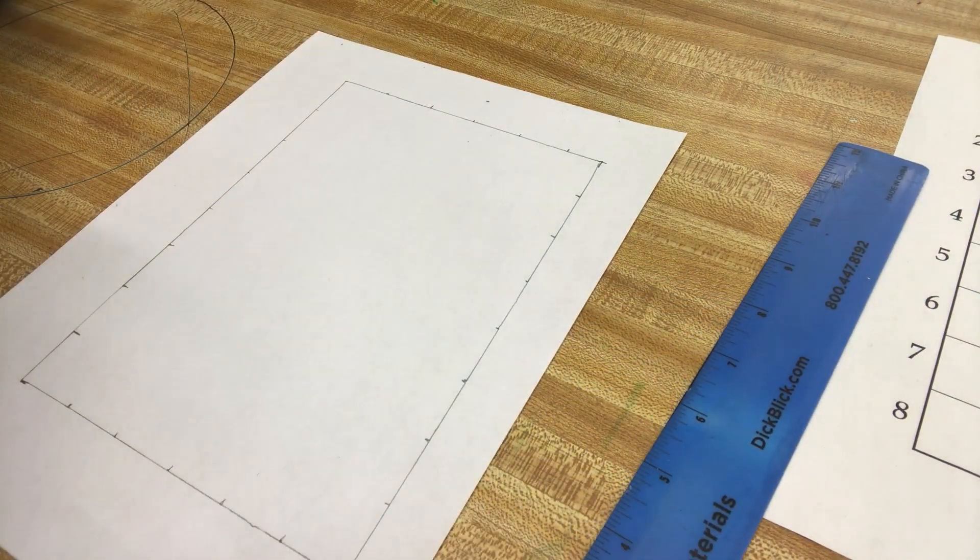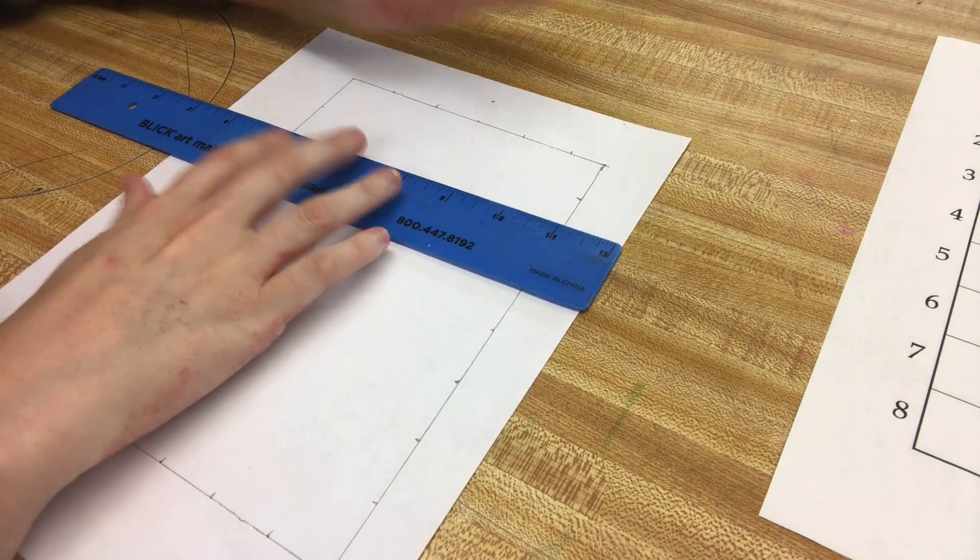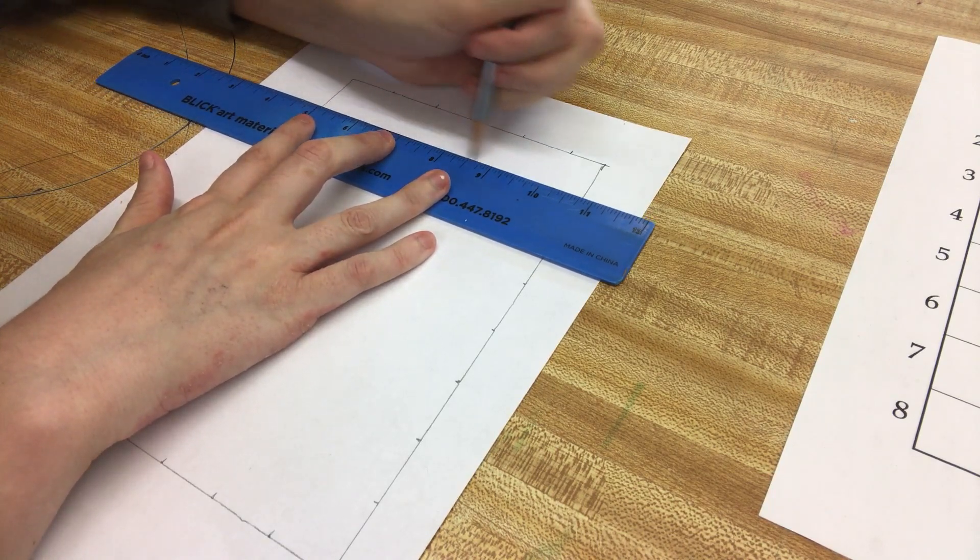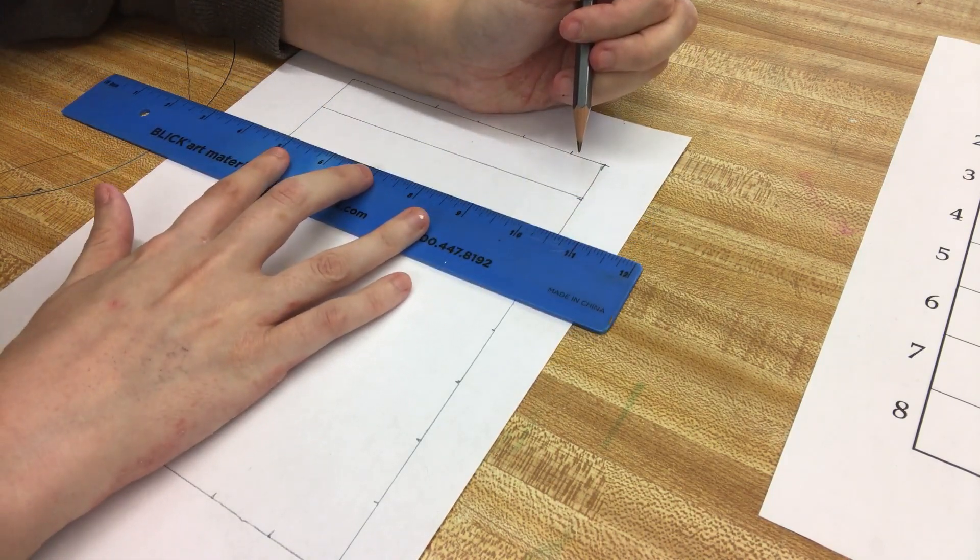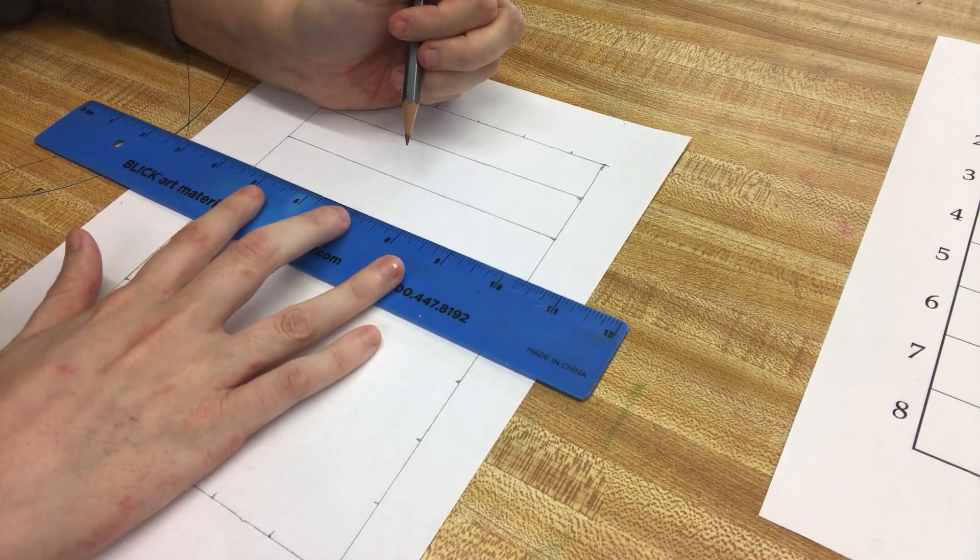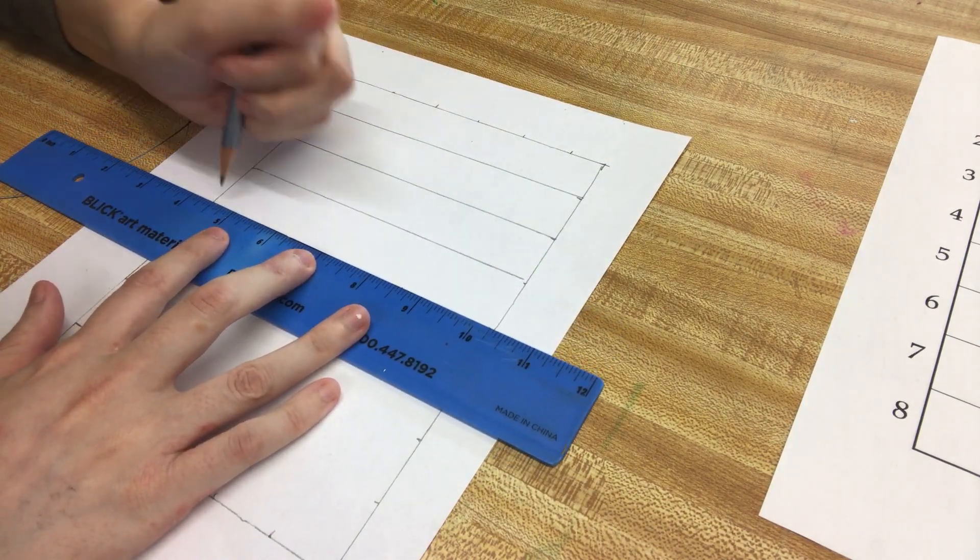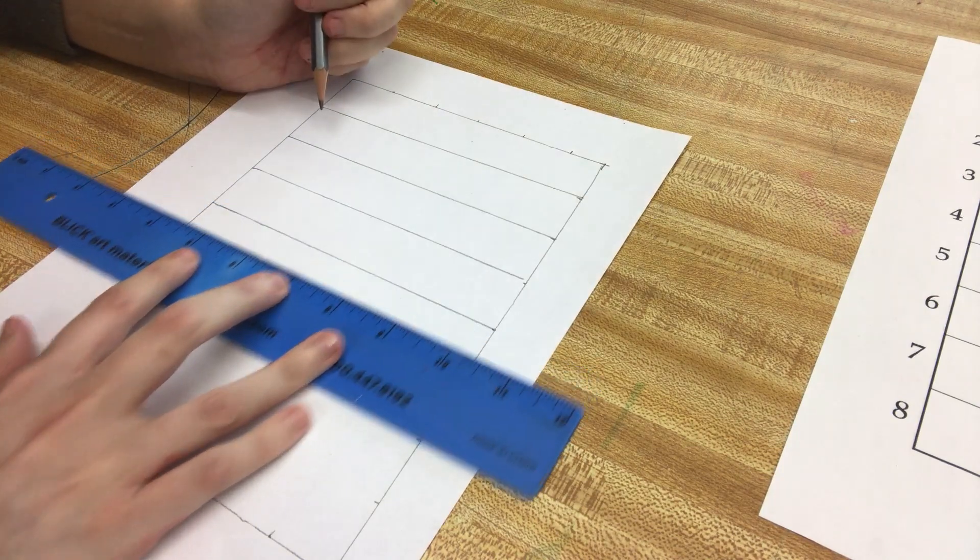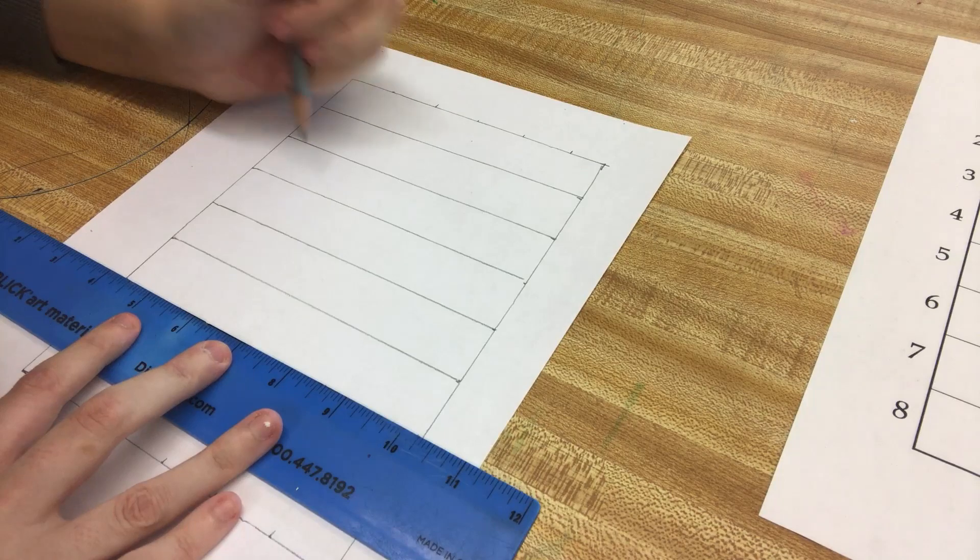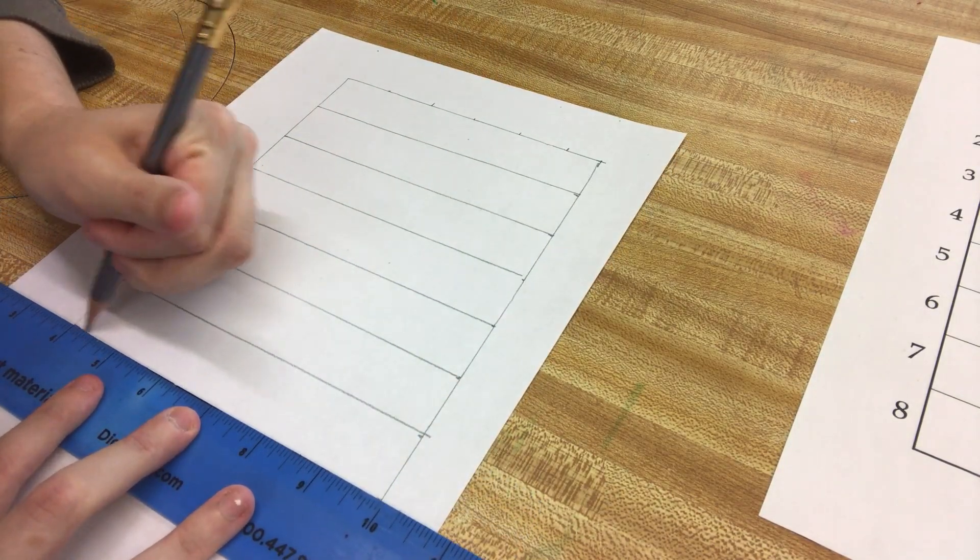Now we're going to use our ruler to connect the dots going up and down. So I can put this dot with this one here, put this one with this one here. That's why it was so important for us to make our dots because it makes life so much easier later on whenever we need to start making our boxes.